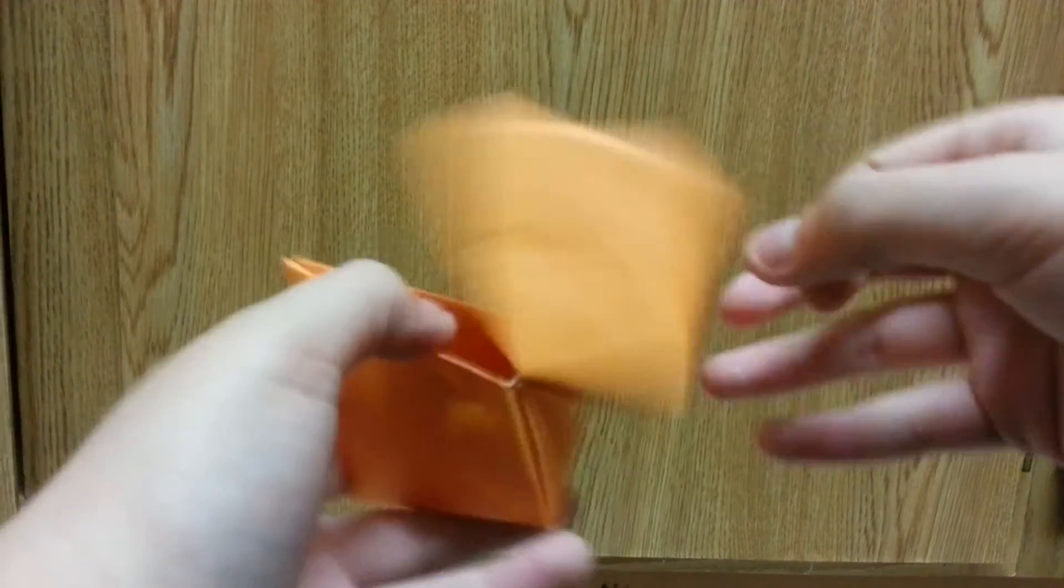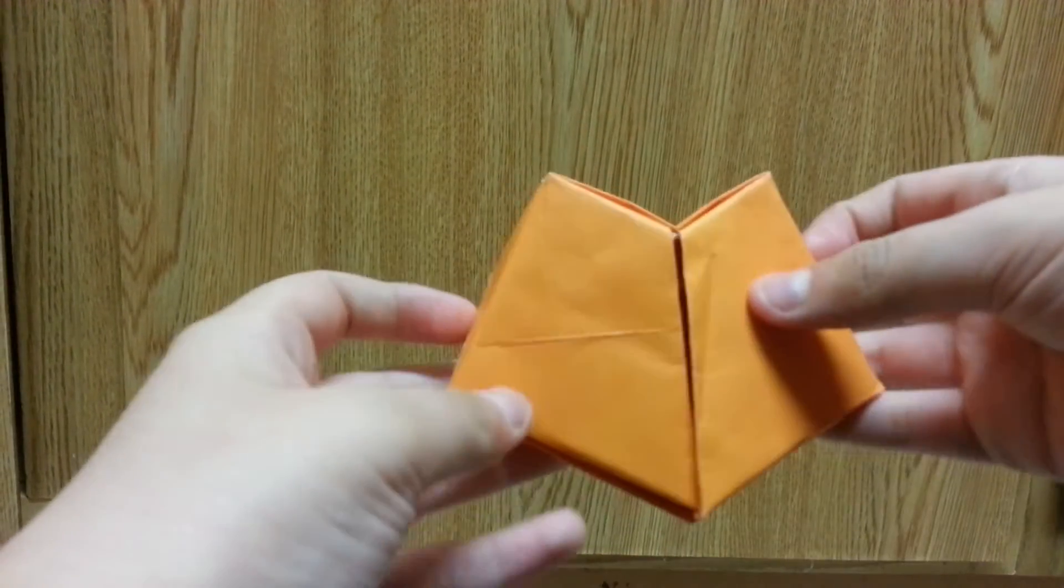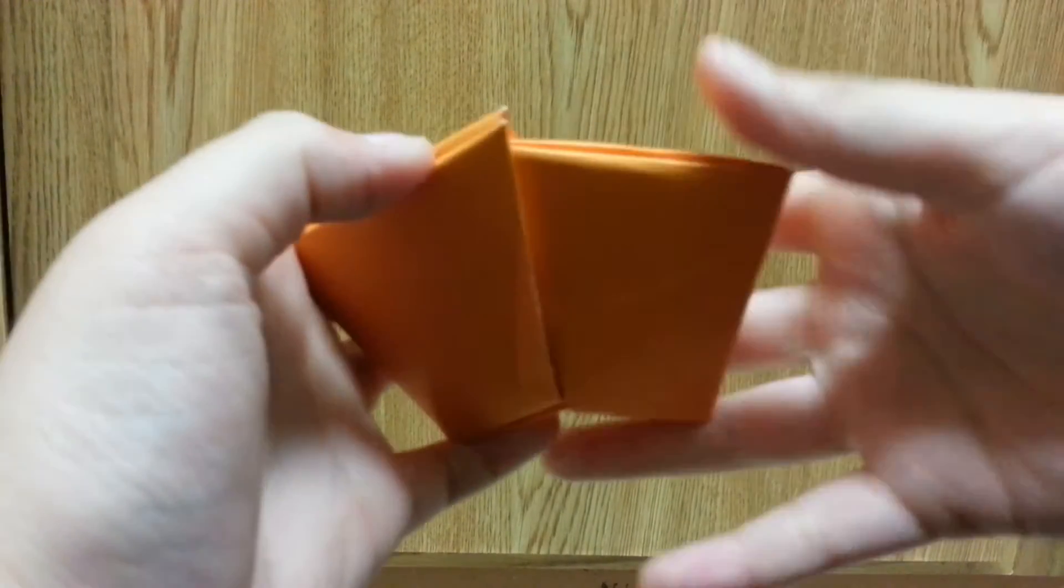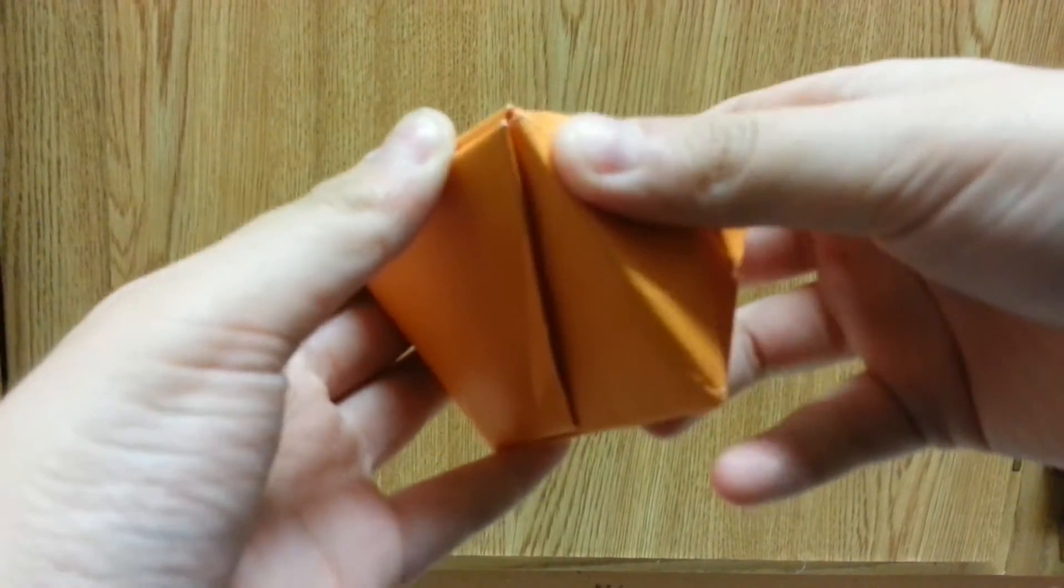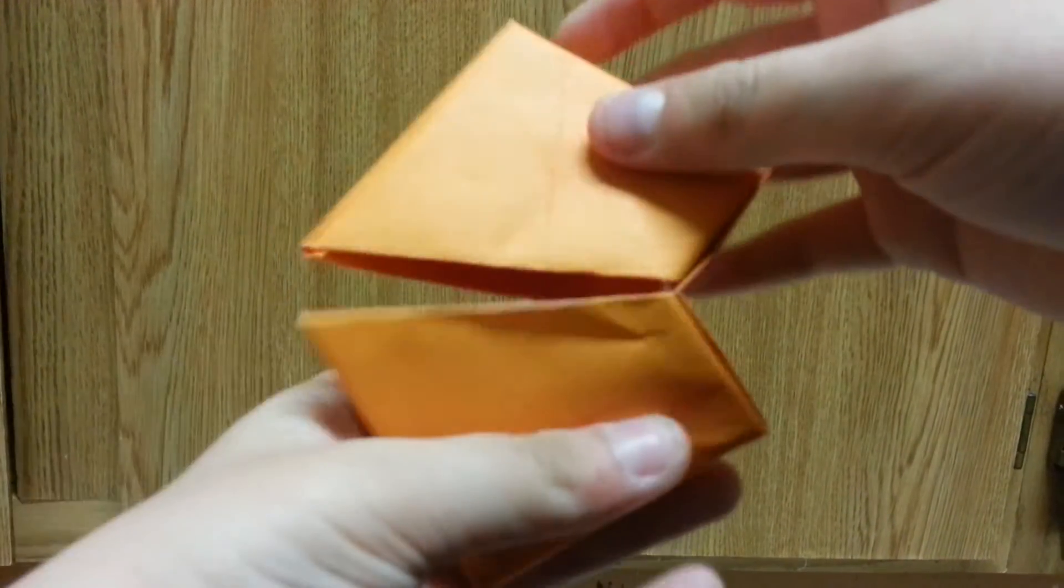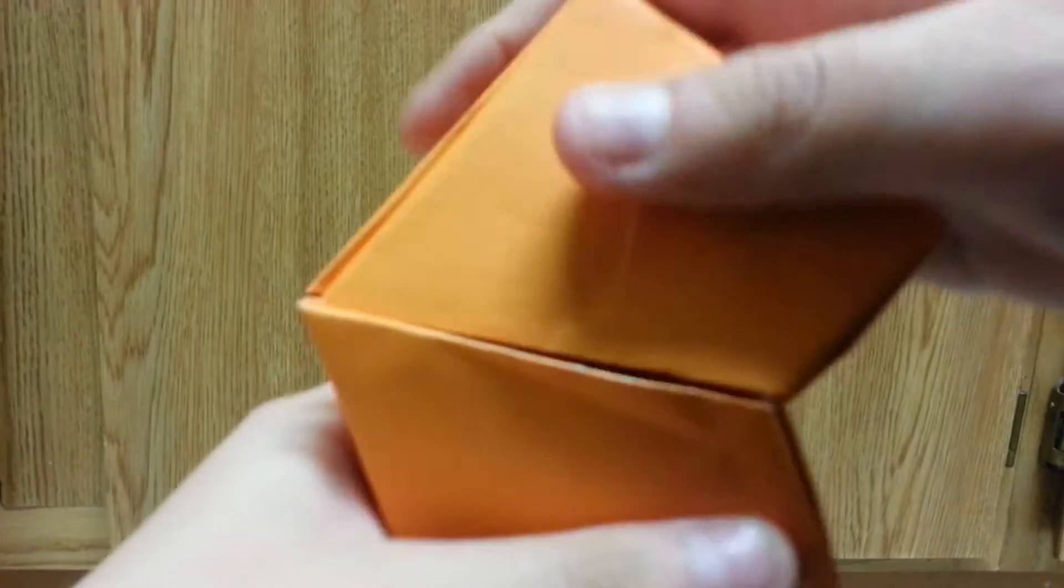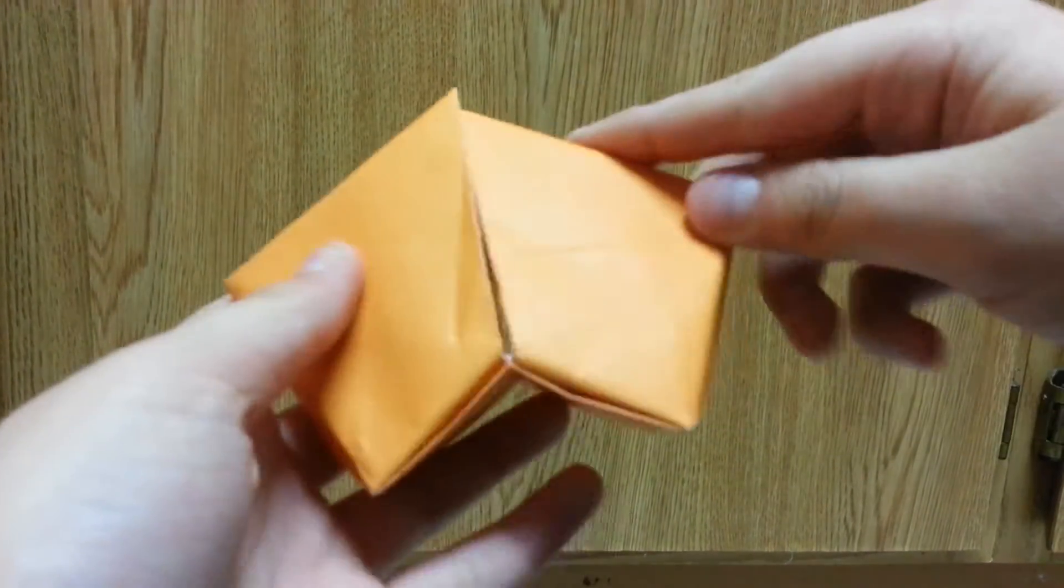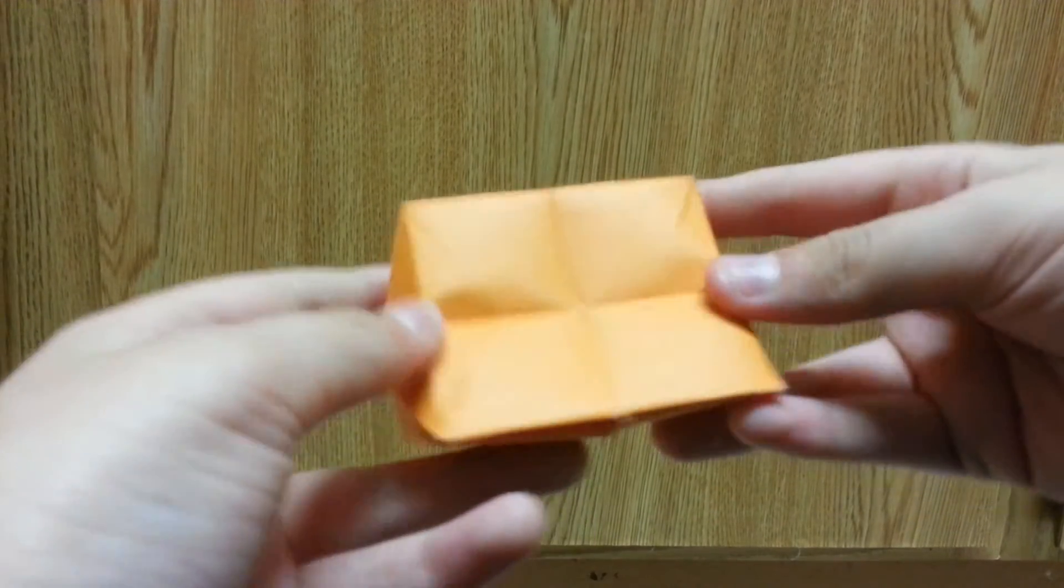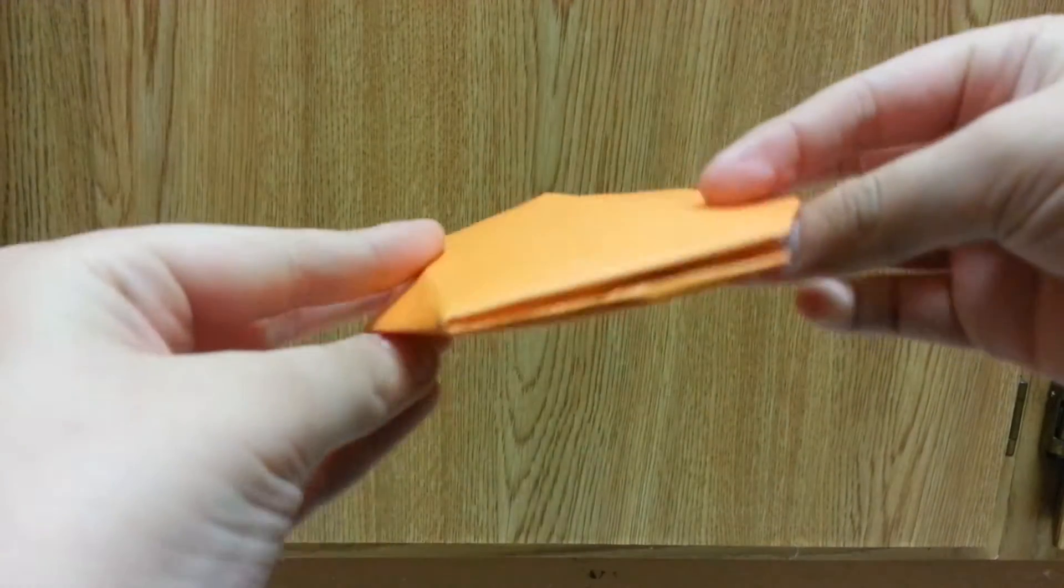And it can also be a heart. So yeah, just put it in like that. But yeah, just triangular prism, and then it flattens, so it's a pretty cool origami model.